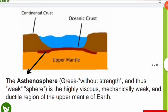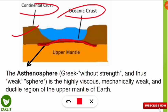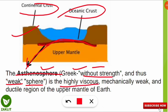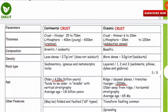The continental crust is present on land and the oceanic crust is below the oceans. The upper mantle part is the asthenosphere. The Greek word 'astheno' means without strength or weak, so the asthenosphere is a weak sphere. It is highly viscous, mechanically weak and ductile, and is the upper part of the mantle region included within the lithosphere.